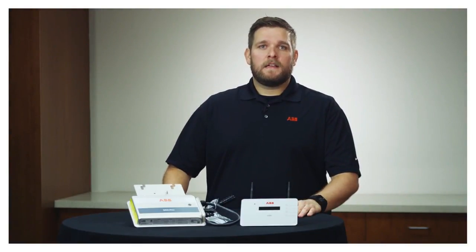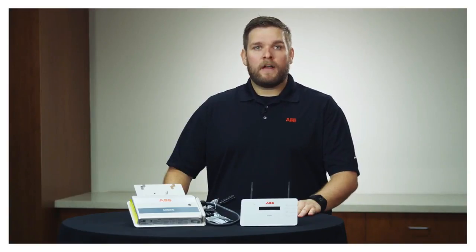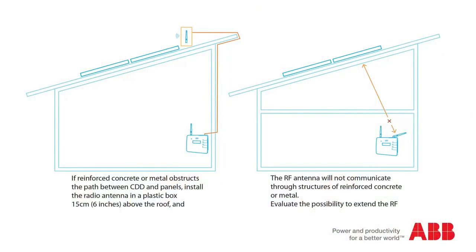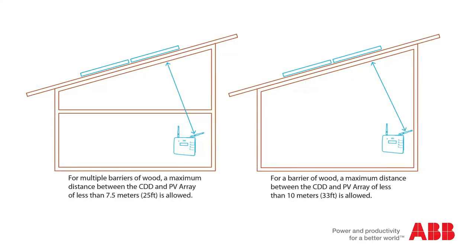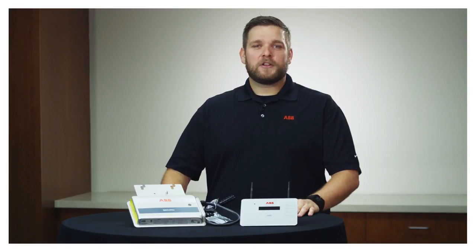Before mounting the CDD, it is important to consider all viable locations and properly evaluate the right position for the CDD and microinverters to communicate with each other. With the microinverter installed on the roof, the distance between the inverter and the CDD should be in close range — if the distance is too great, the signal will not be strong enough for the monitoring functionality to work. Check the manual for specific location guidance. After an appropriate location has been identified, mount the CDD to the wall.